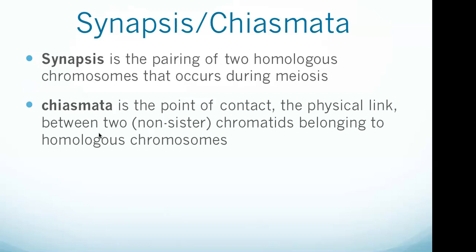Synapsis is the pairing of two homologous chromosomes that occurs during meiosis. It allows the matching up of homologous pairs prior to their segregation and possible chromosomal crossover between them. Synapsis takes place during prophase one of meiosis.